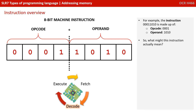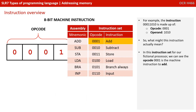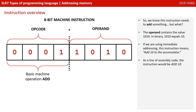Well, in this instruction set for our fictional processor, we can see the opcode 00001 is the machine instruction to add. So, we know that this instruction needs to add something — but add what? Well, the operand contains the value 1010, and in binary that equals the denary value 10.